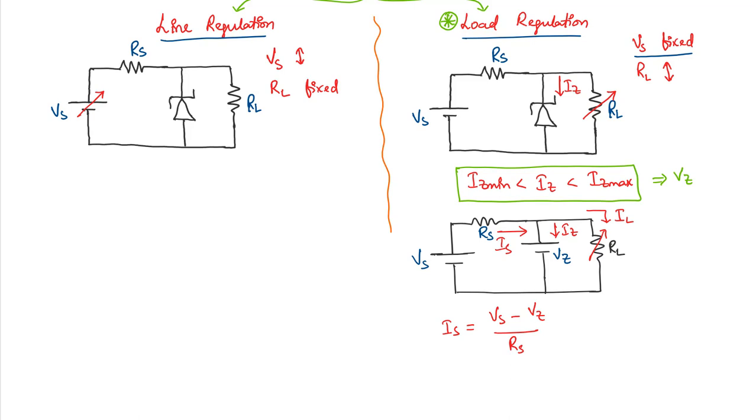So which means as we know that zener diode voltage is fixed which is Vz and Vs is also fixed and if Rs is chosen to be a value obviously it will be fixed, then Is is going to be a fixed quantity.